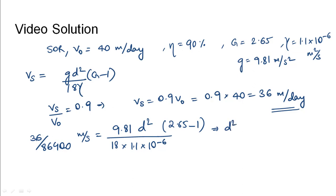Solving for d²: d² = (36×18×1.1×10⁻⁶)/(9.81×1.65×86,400).